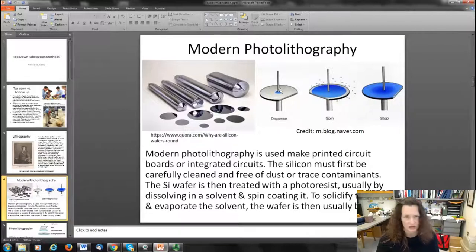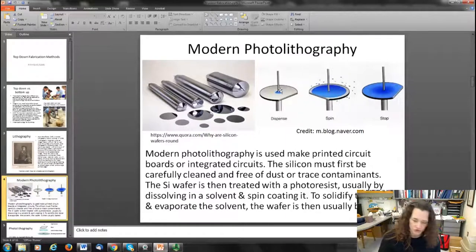That distributes a thin film of the material all over. Usually the film is on the order of tens to hundreds of nanometers thick, depending on how fast you spin it and what your spin coater is like and how much material you initially put down. Then you stop it and you've got that uniform thin film all over the surface.